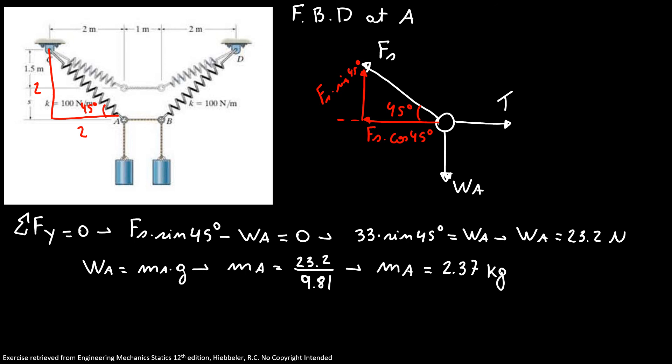So my mass A is equal 23.2 Nm divided by 9.81 meters per second. So my mass A is equal 2.37 kg. Because our problem is symmetrical, my mass B is equal 2.37 kg as well.